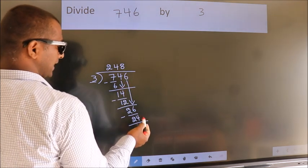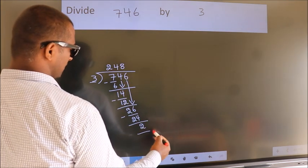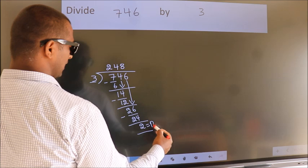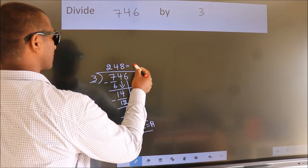No more numbers to bring it down. So we stop here. This is our remainder. This is our quotient.